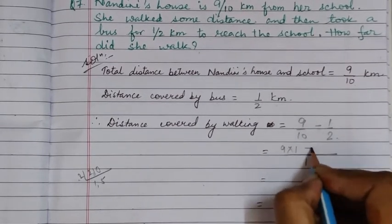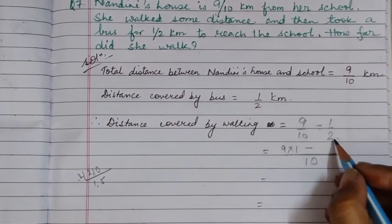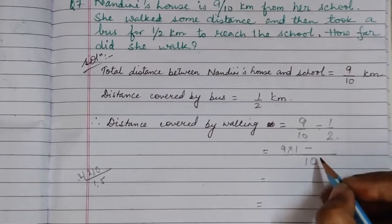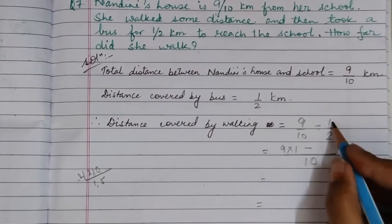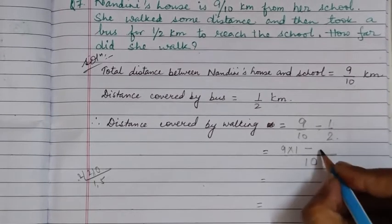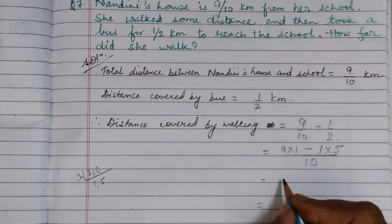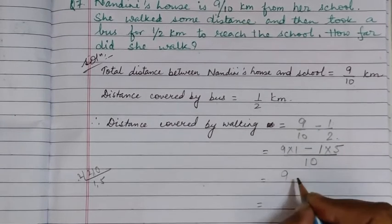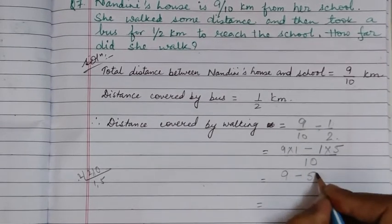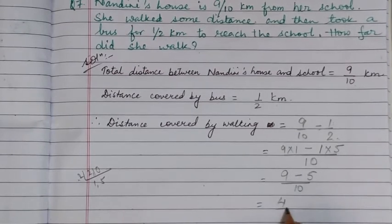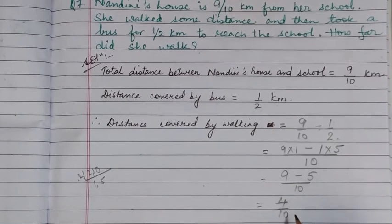Then minus. In the second fraction we have 2 in the denominator, and we know 2 fives are 10. So in the numerator we have to multiply by 5 — we will write 1 into 5. On multiplying we get 9 minus 5 by 10.